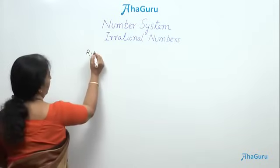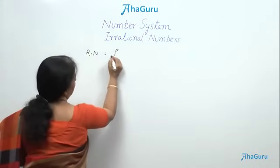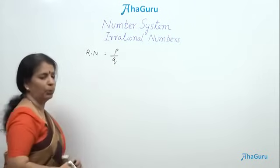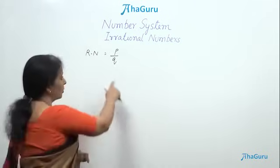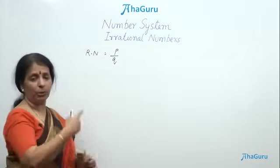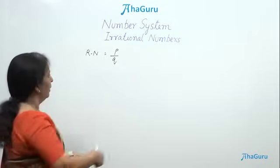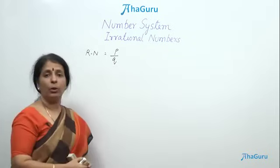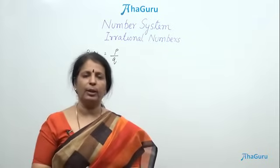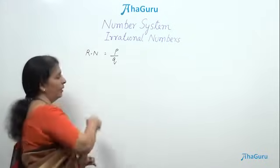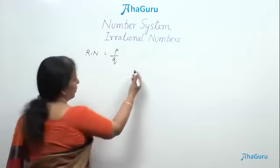Rational numbers, which I'll write as RN, are generally written as P by Q, where both P and Q are integers. Q is not equal to 0 because that makes it undefined. They should be co-prime - P and Q should have no common factor other than 1. That makes it a rational number.